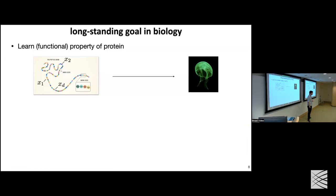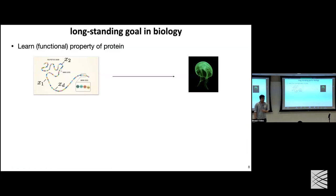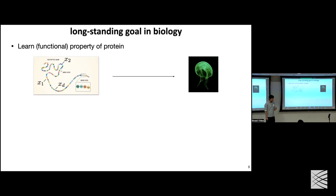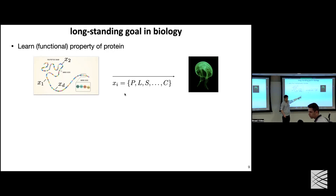I'm going to take the green fluorescence protein as a model protein and take fluorescence as a model function, but most of what I discuss will generalize to other functionalities like binding to other molecules or signaling. Let's put some math on this problem. I'm looking at d many sites in a protein, and the question is: if I start changing the amino acid at these sites, how does the property of the protein change? We have 20 amino acids, so for each site I can switch to 19 other amino acids.